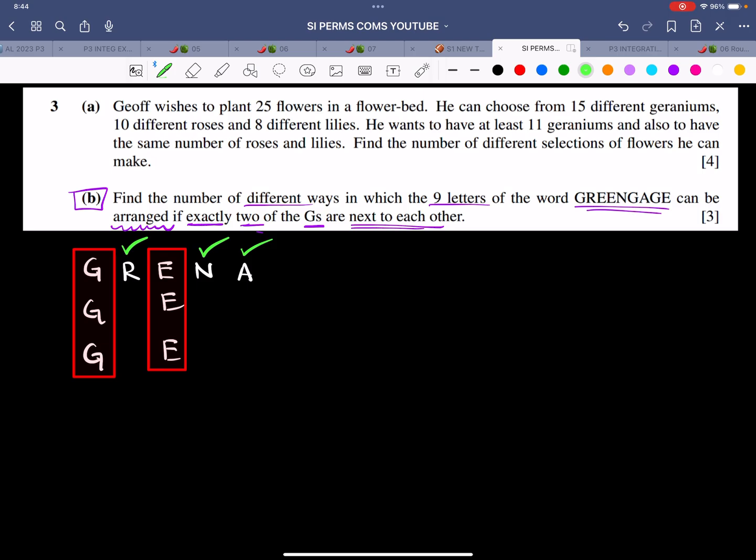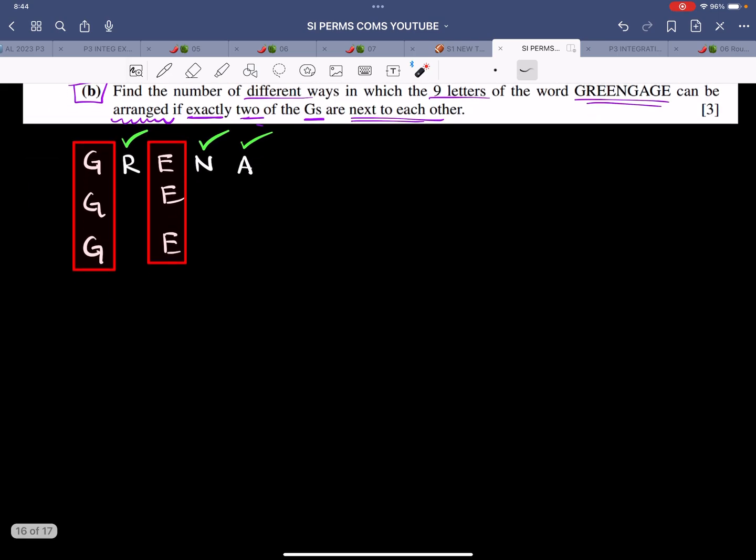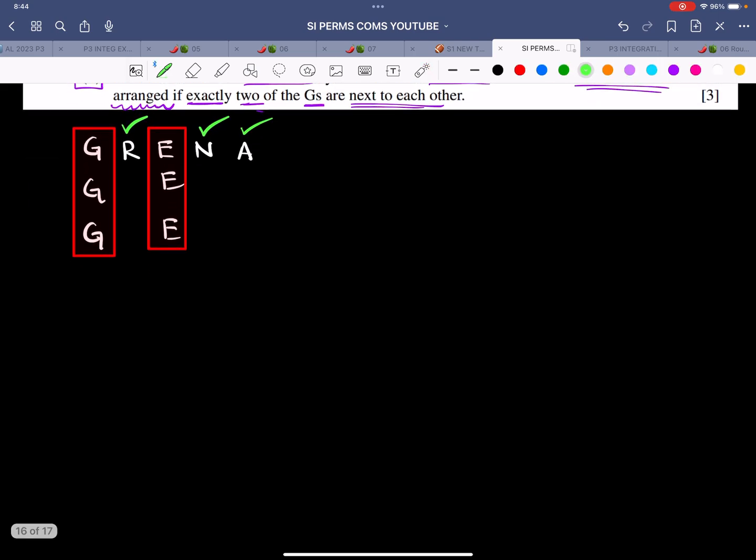They are asking for exactly two of the G's next to each other. This is considered one of the trickiest questions in permutation that ever came. Till now, this is one of the most difficult ones that ever came. So exactly two of the G's are next to each other. Let me do it by two different methods.